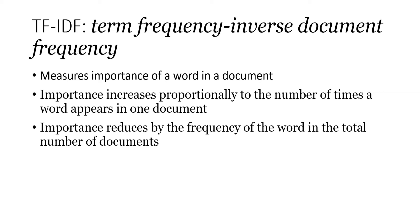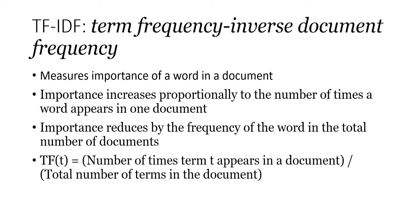The other side is that the importance of a word reduces by the frequency of that word across the total number of documents. So if you have a hundred documents and a word appears in all hundred of them, the importance of that particular word will be reduced. The formula involves calculating term frequency, then inverse document frequency, and finally taking the dot product of the two.